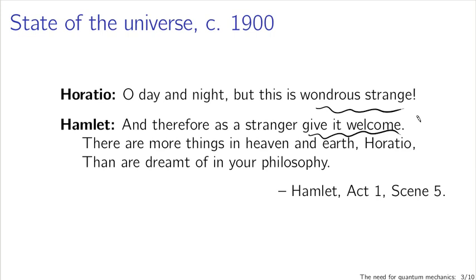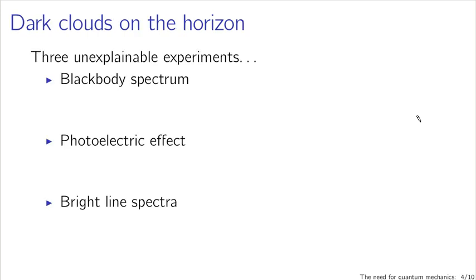Now to move on to the necessity for quantum mechanics. There were some dark clouds on the horizon, even at the early 20th century. Michelson wasn't quite having a big enough picture in his mind when he said that everything was down to the sixth place of decimals. The dark clouds on the horizon, at least according to Kelvin here, were a couple of unexplainable experiments.